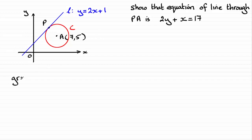Let's just start with the gradient of L. You should be able to see that the gradient of the line L is the m value in front of the x and that is the 2.